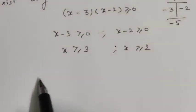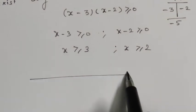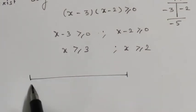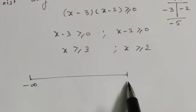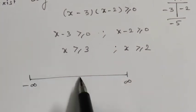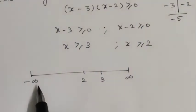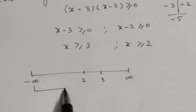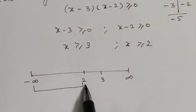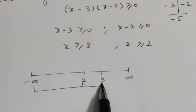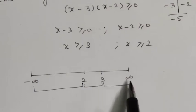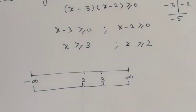On the real number line from minus infinity to plus infinity, we mark the points 2 and 3. This gives us three intervals: minus infinity to 2, then 2 to 3, then 3 to infinity.